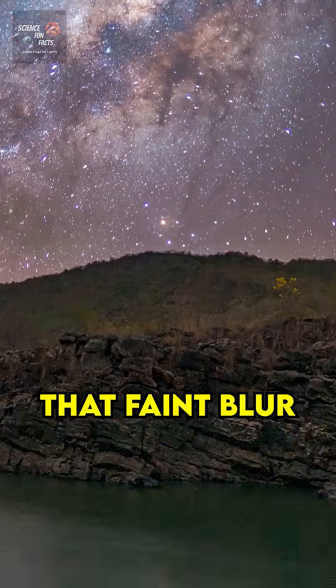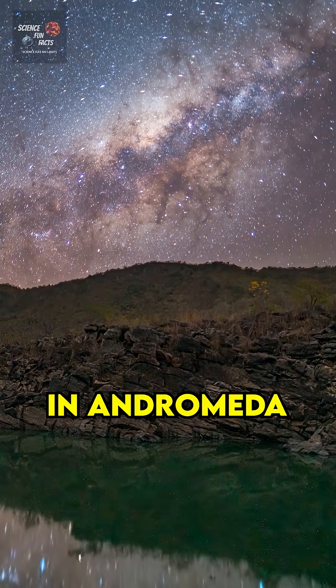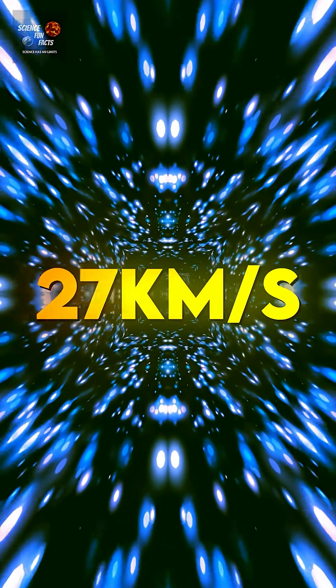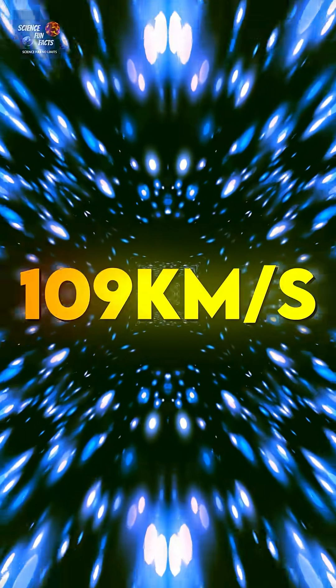What if the sky grew a scar? That faint blur in Andromeda isn't just a neighbor. It's moving toward us at about 110 kilometers per second.